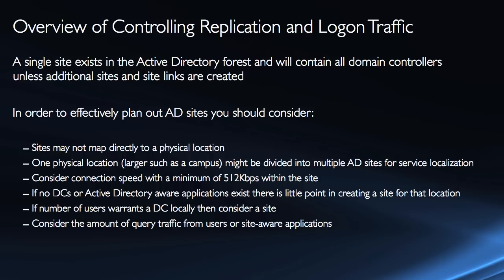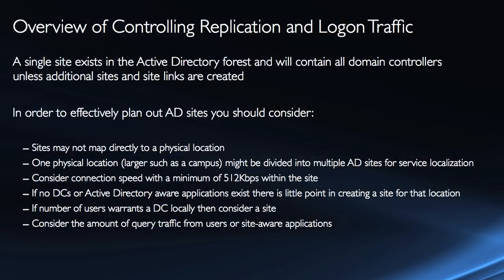Sites may not map to a single physical location. In a lot of cases they will map directly to physical locations, but sometimes we do have multiple physical locations in the same site — for example, a campus or a school that has multiple buildings can all be located in the same site. On the other hand, a campus might also be divided into multiple sites for service localization — meaning you want users to hit a domain controller or other server that is as local to them as possible, so you could divide those larger networks into additional sites.